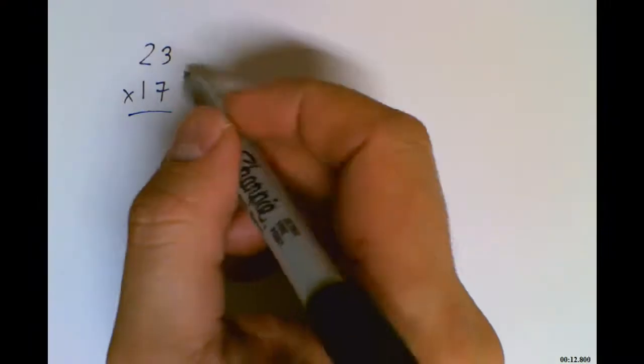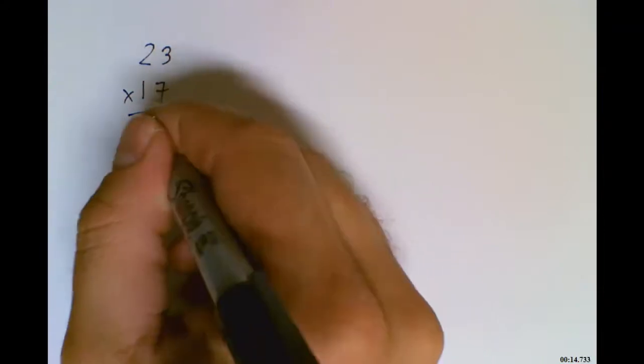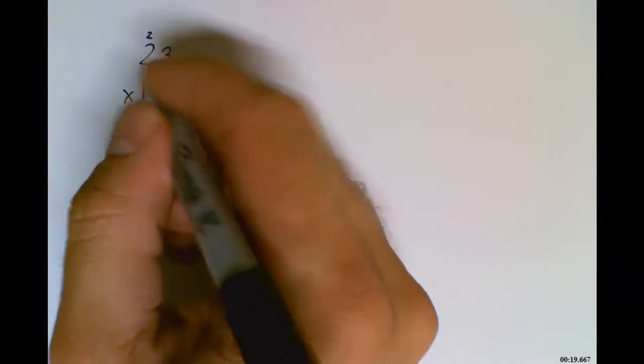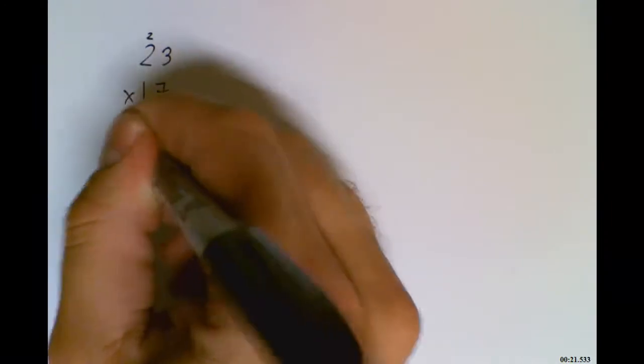Using the standard algorithm, we would go 3 times 7 is 21, carry the 2. 2 times 7 is 14, so add 2 is 16.